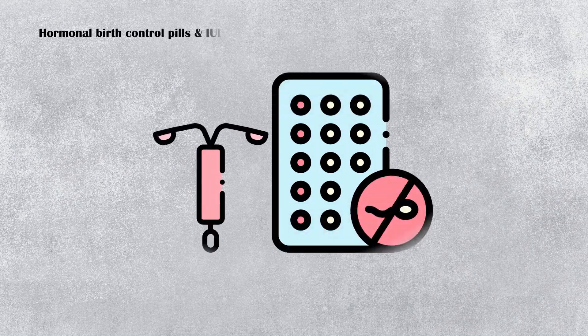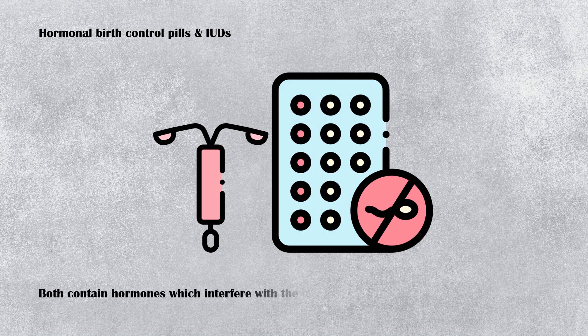Hormonal birth control pills and intrauterine devices. Both contraceptives contain hormones, which interfere with the physiological hormone secretion in the female, causing irregular periods.